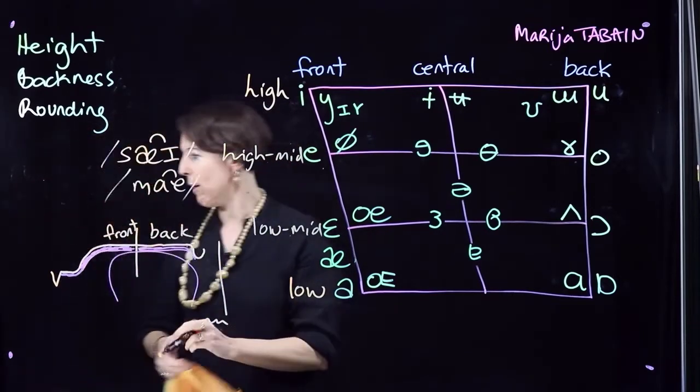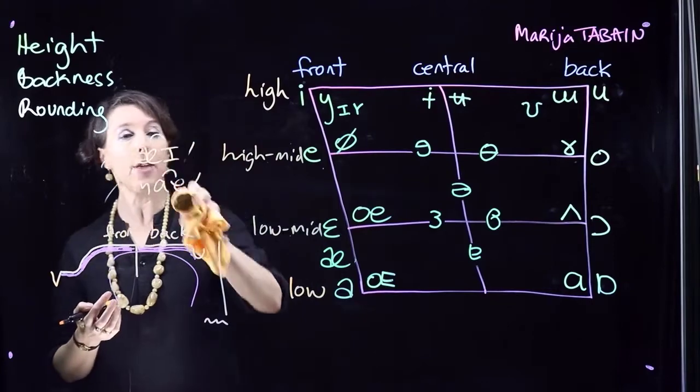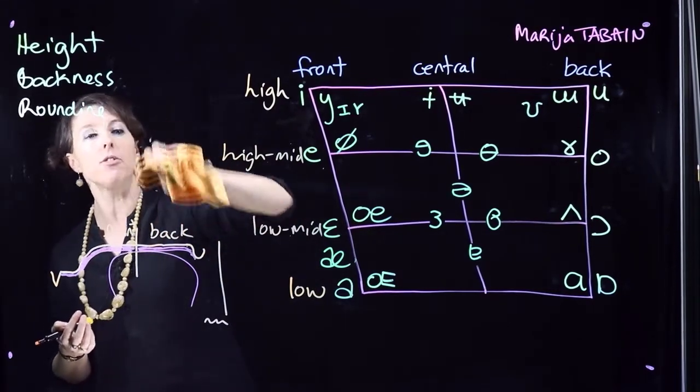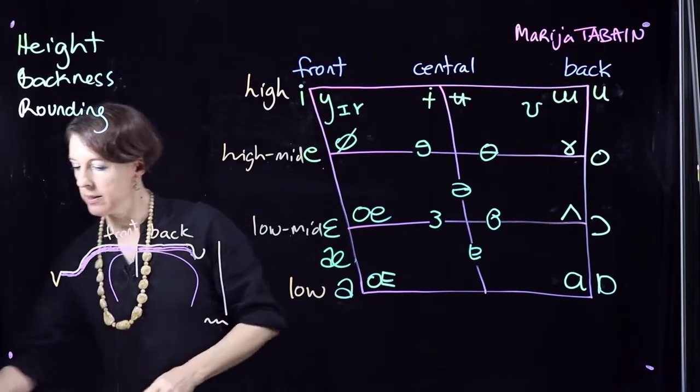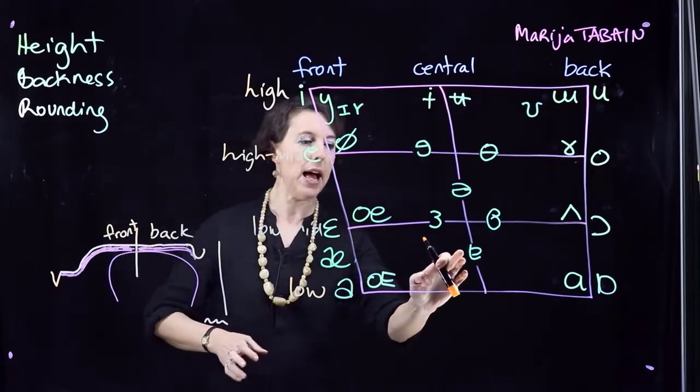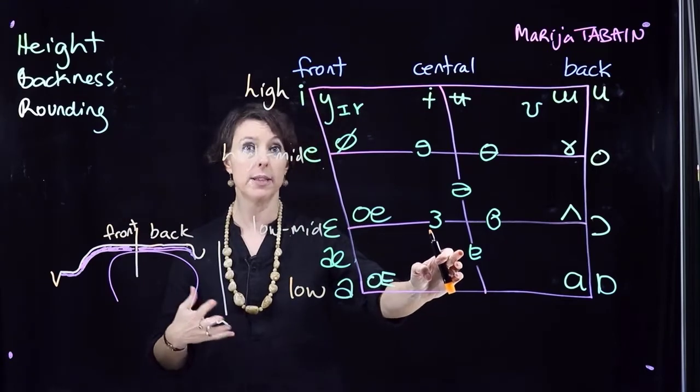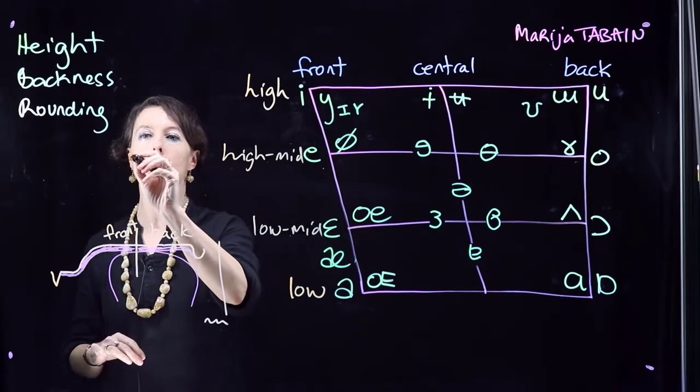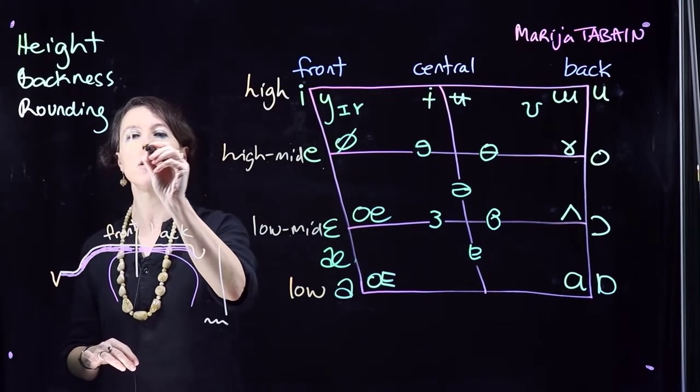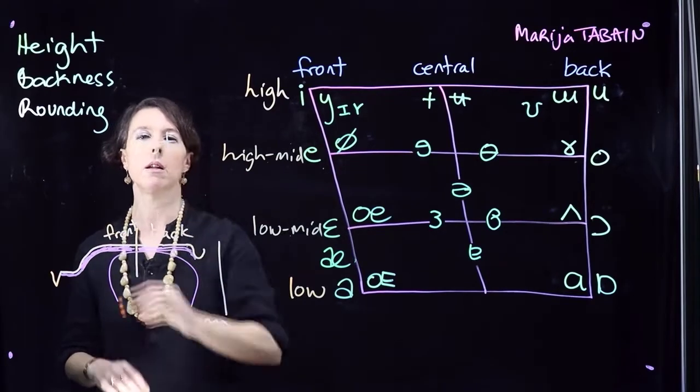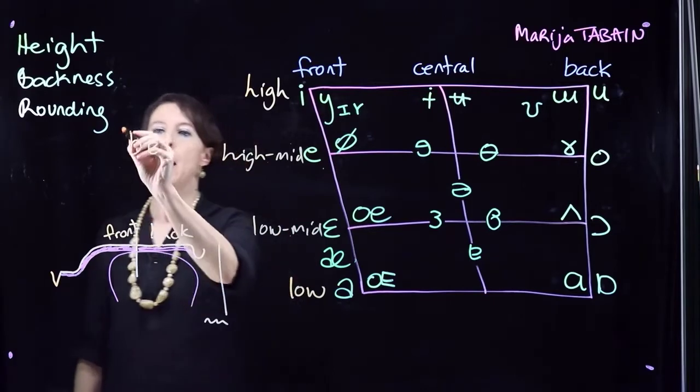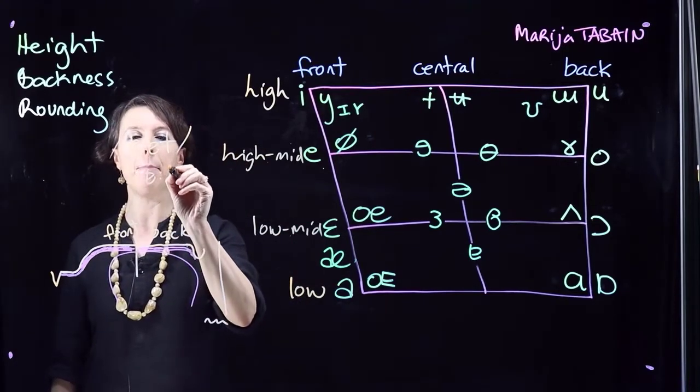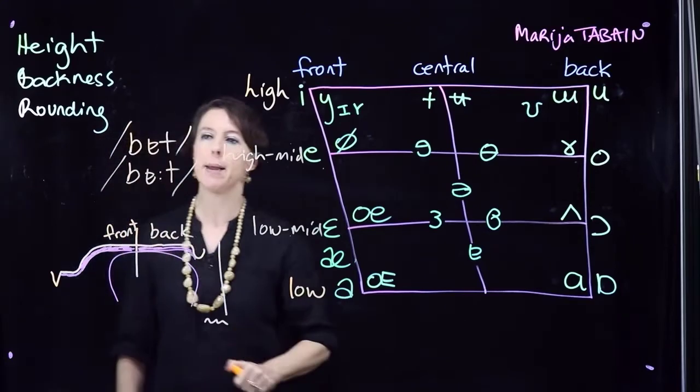The other thing that languages can do is add length. In my dialect of Australian English, we use length a lot. For instance, the low central vowel – we might have a word like 'but,' and we have a long version of the same vowel, 'Bart,' as in the boy's name.